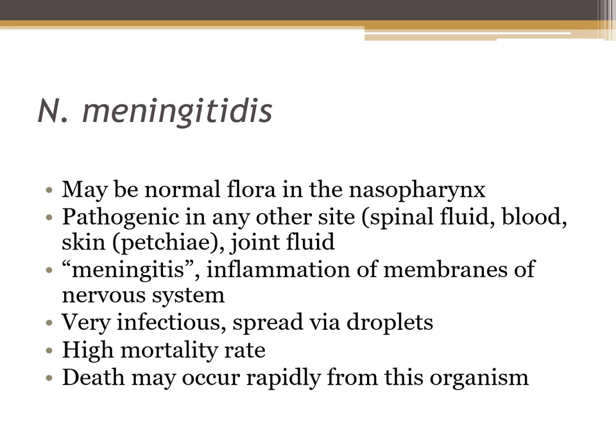Neisseria meningitidis is normal flora in up to 30% of the population in the nasopharyngeal area, but can be pathogenic in other body sites including spinal fluid, blood, skin — where you may see a rash known as petechiae — and joint fluid. Meningitis means inflammation of the meninges of the brain and spinal cord. Neisseria meningitidis is very infectious, spread via droplets from coughing or kissing, with a high mortality rate. Disease progression goes: headache, fever, and stiff neck → petechiae rash → delirium and convulsions → disseminated intravascular coagulation (DIC) → coma → death.